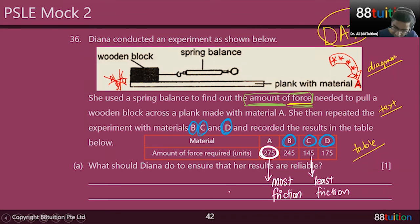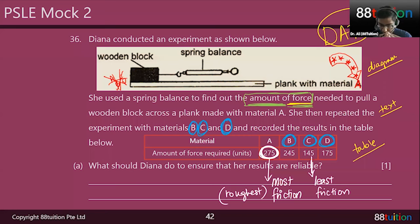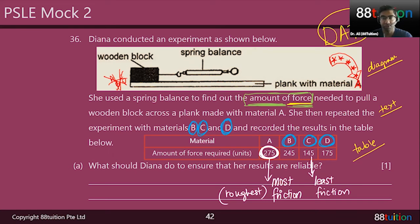You can write that material A is the roughest, but in science we use the word friction. Students across Singapore are tested on whether they learned the word friction — we don't want you to say rougher or smoother. Write: between material A and the wooden block there is the most friction, and between material C and the wooden block there is the least friction, therefore the forces are as shown. Regarding terminology: you can say frictional force or friction — similar to how you can say gravitational force or gravity. But for magnetic force you must say magnetic force, and for elastic spring force you must say that as well.